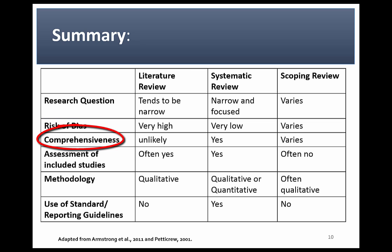Regarding comprehensiveness, narrative reviews are rarely comprehensive as they do not involve a systematic search of the literature. Systematic reviews are highly comprehensive. In scoping reviews, the authors are likely to have made significant efforts to be comprehensive, but this may be hard to achieve if the research question is broad.